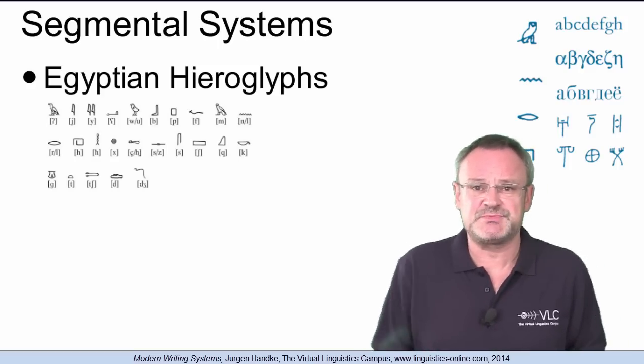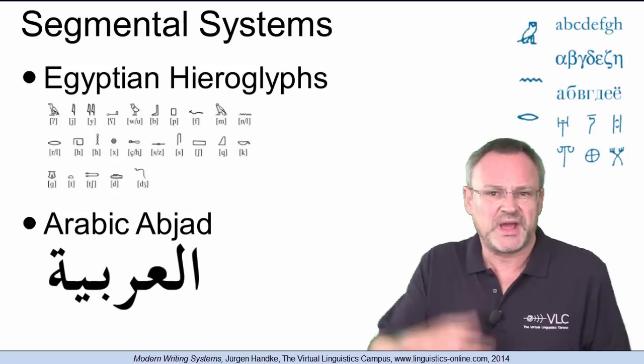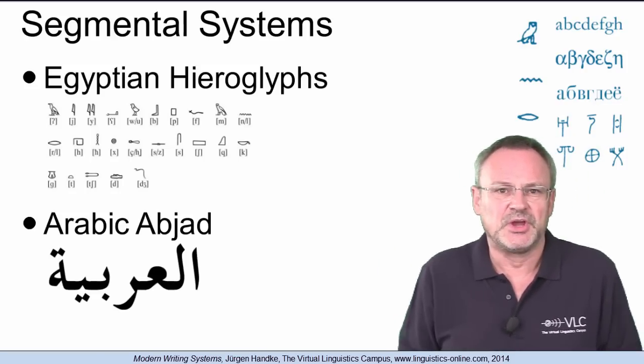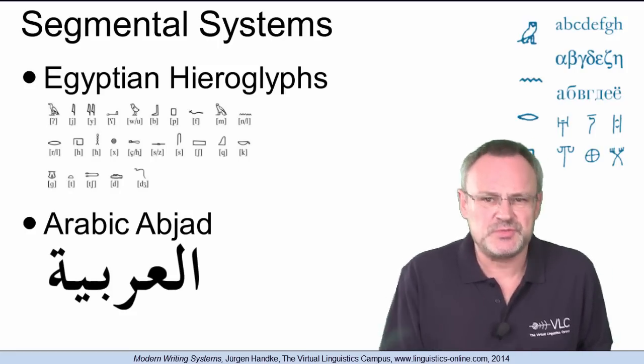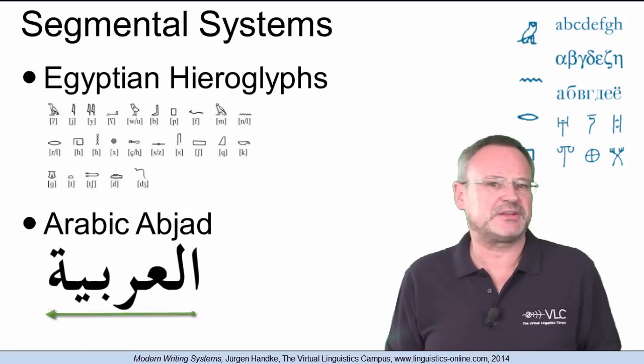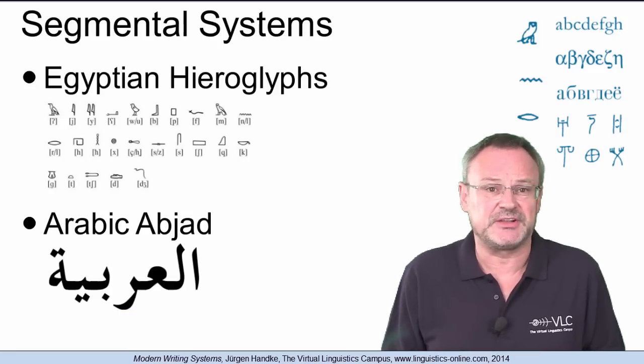A modern system is the Arabic abhyad, where abhyad means alphabet, which is used in the Semitic languages. It is written from right to left and its characters exhibit consonantal values.